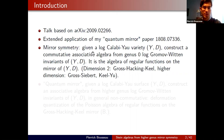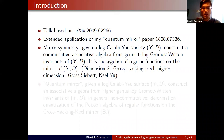The general setting is mirror symmetry. Given a log Calabi-Yau pair (Y, D), one takes as input genus zero log Gromov-Witten invariants — an algebro-geometric version of counts of Maslov index zero disks — and constructs a commutative associative algebra, the algebra of regular functions on the mirror. In dimension two this construction is due to Gross-Hacking-Keel, and in higher dimensions to Gross-Hacking-Keel-Siebert and Keel-Yu.